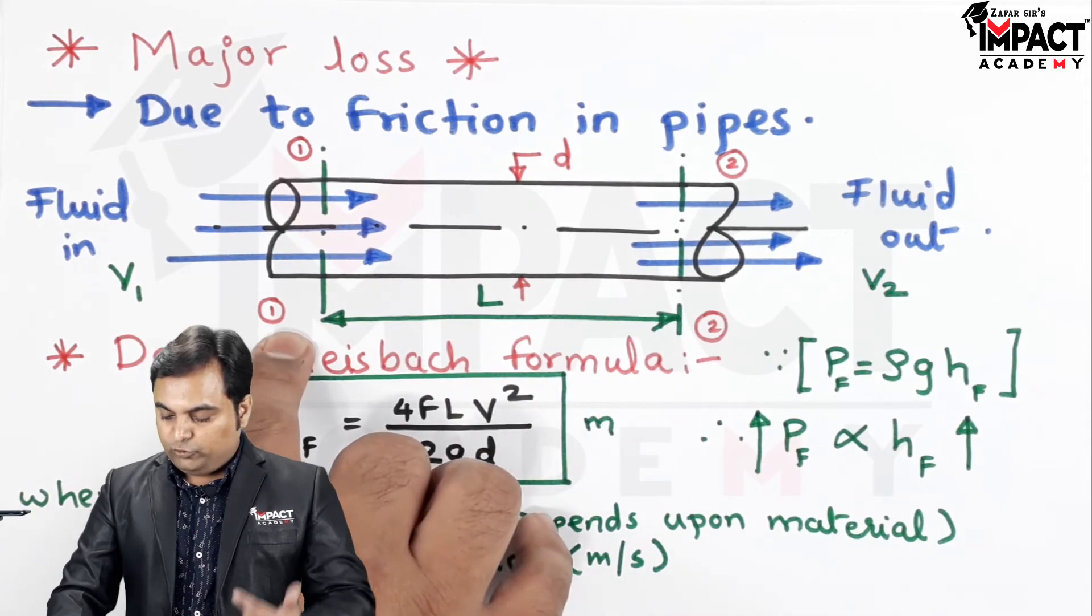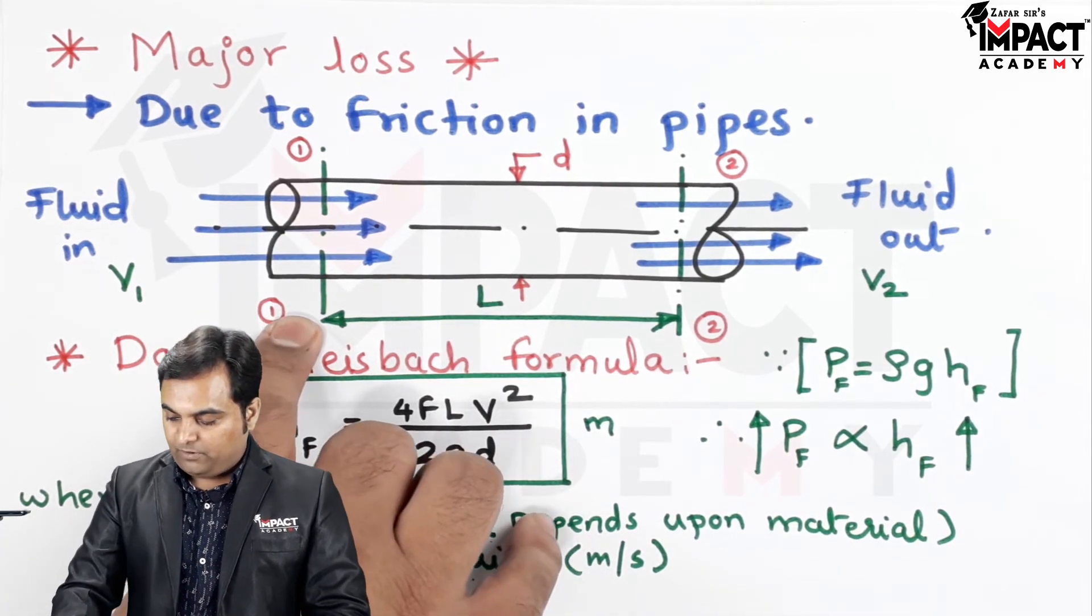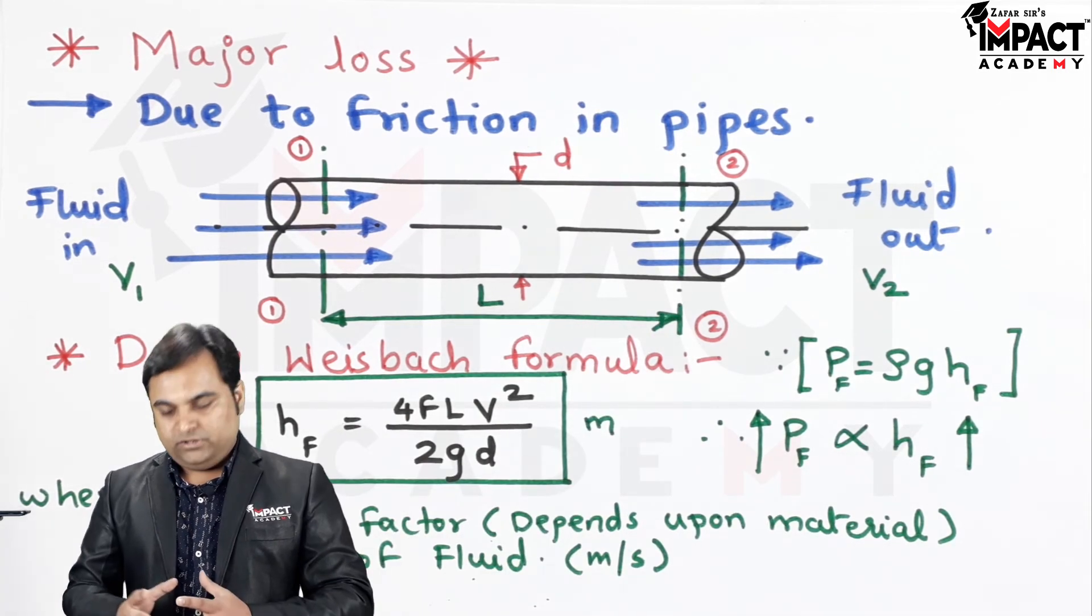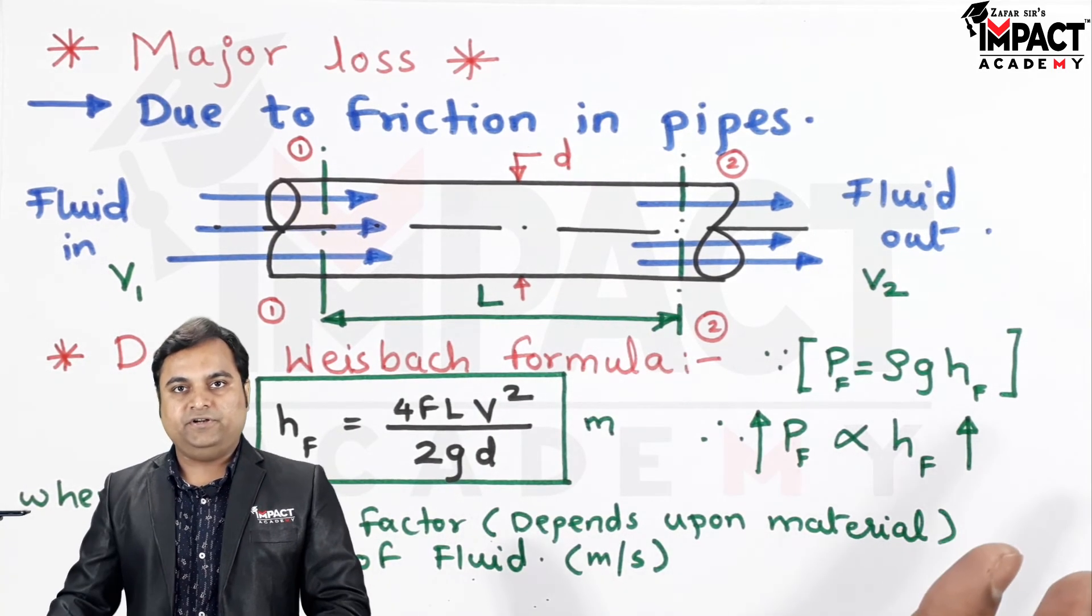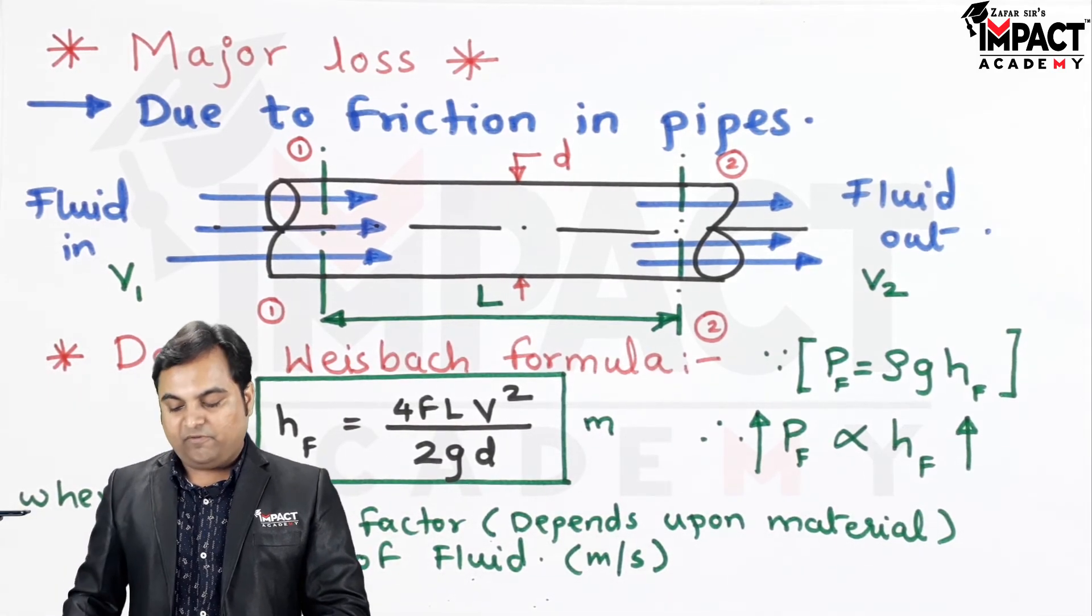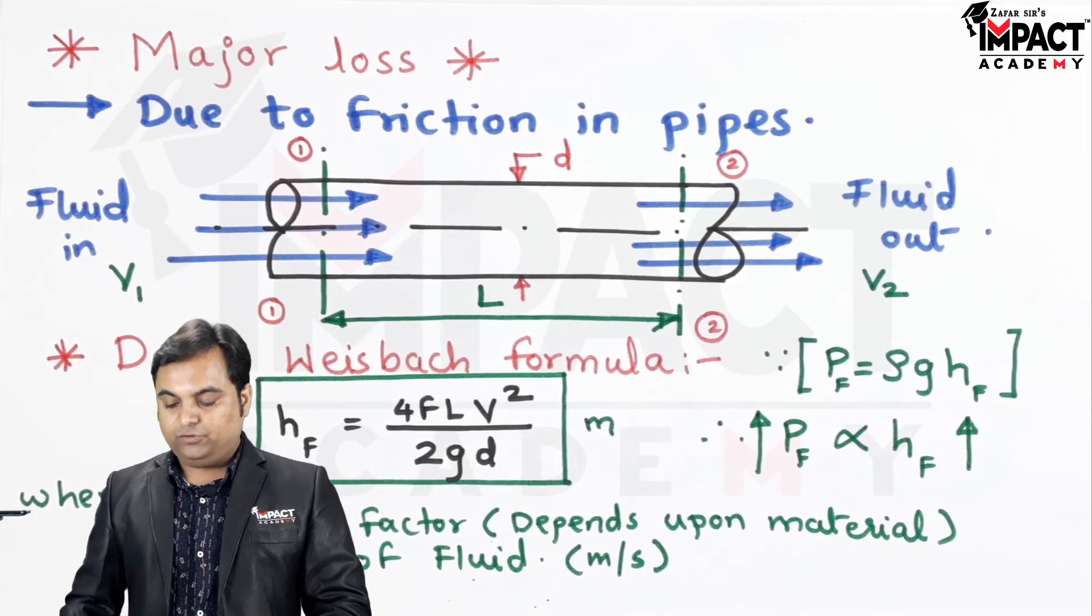It means when the fluid is starting to flow from point number 1, it reaches point number 2, there are some losses. And the major loss which I have considered here, it is due to friction and it can be calculated by using the Darcy Weisbach formula as I have shown it over here.